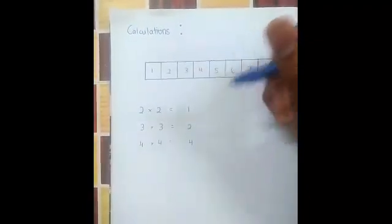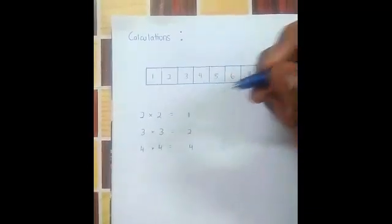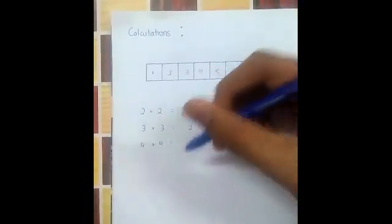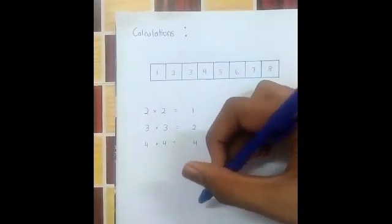In this sequence, the pattern is multiplying the previous number by 2. According to my understanding, the upcoming numbers should be 8, 16, 32, and 64.